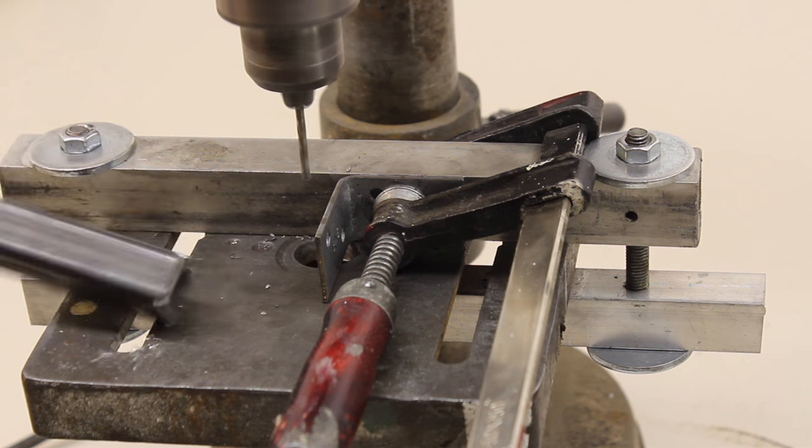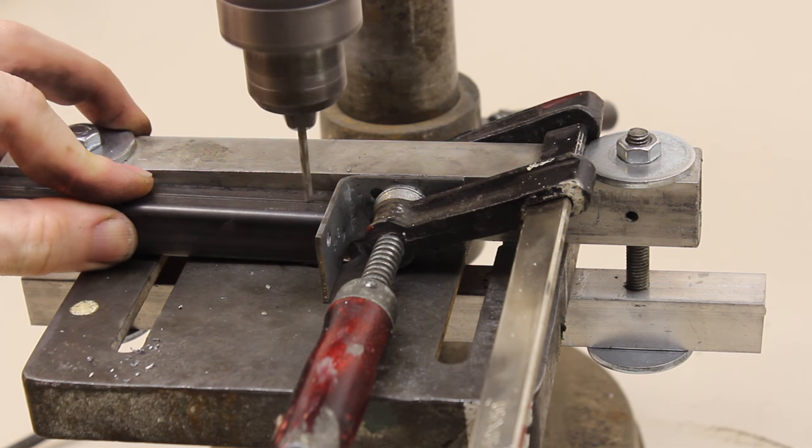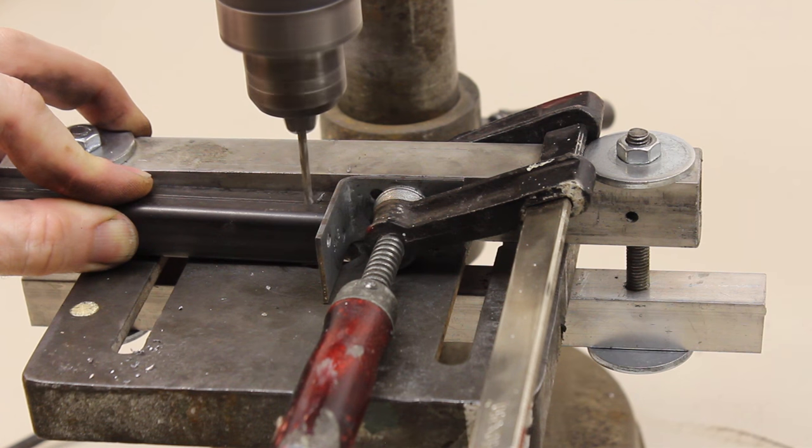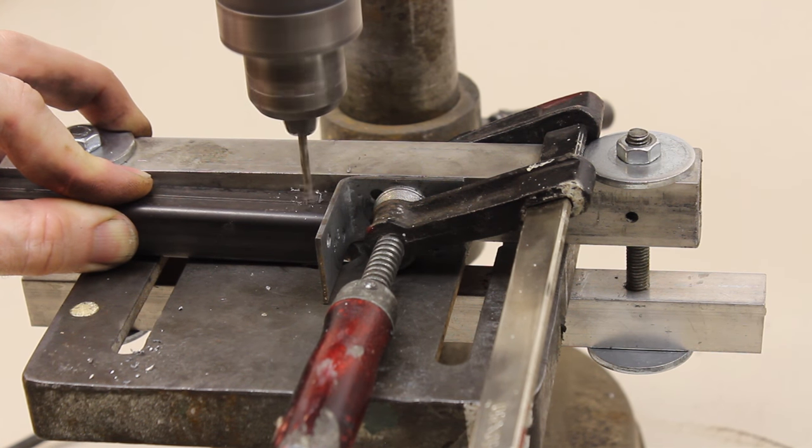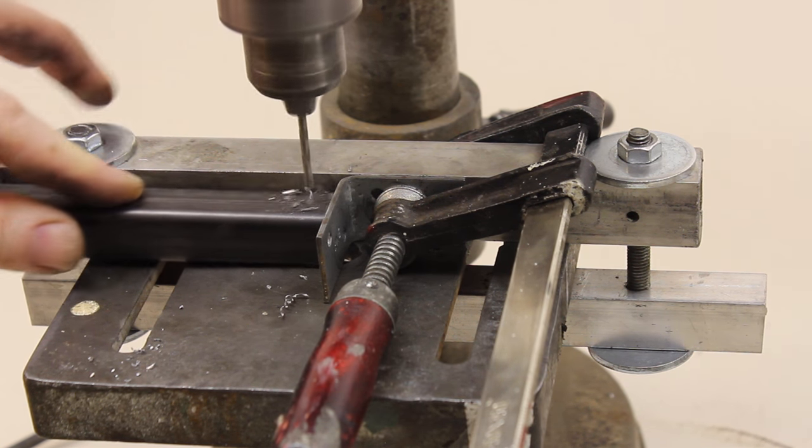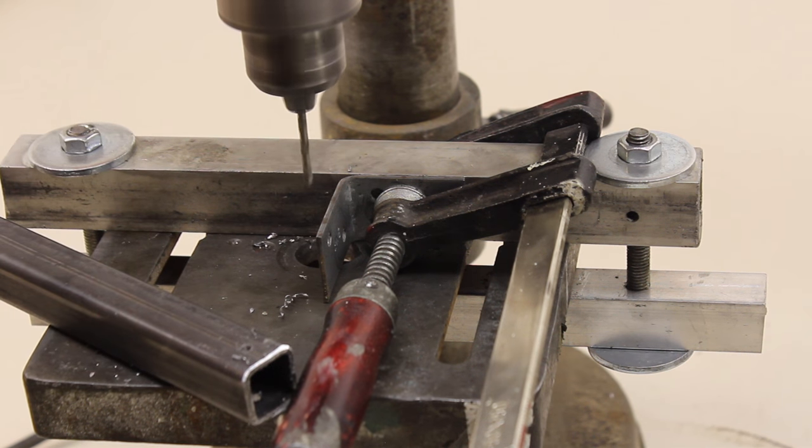If a hole is also needed on the opposite side, you should not drill through the square tube but bore from both sides, otherwise the drill will bend hardly resulting in a misplaced hole on the bottom side or in a cracked drill.